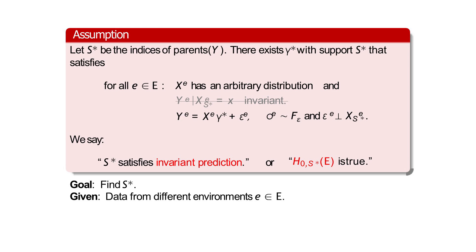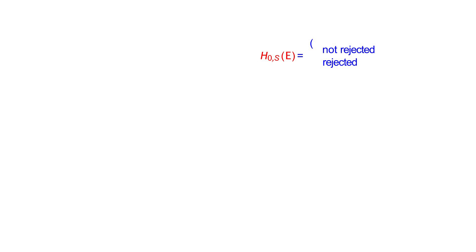We say a set S* satisfies invariant prediction, or that the null hypothesis H_0(S*) is true. In practice we don't have S* — that's our goal. We're given data from different environments and want to exploit that. The main idea is quite simple: we go through candidate sets S and check whether this hypothesis is satisfied or not. We check this null hypothesis for several candidate sets S — there are several test options and we don't claim one is optimal.